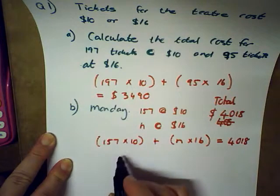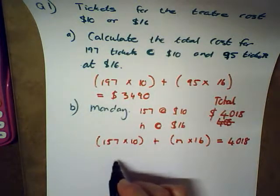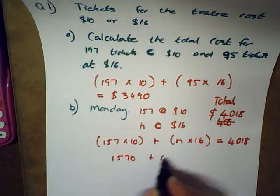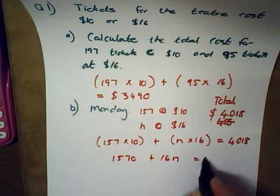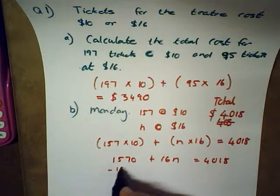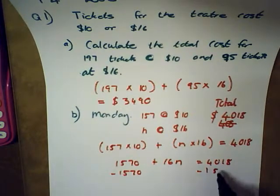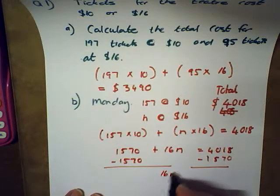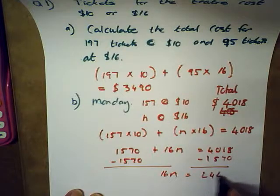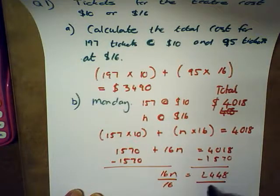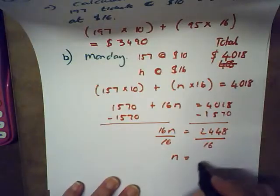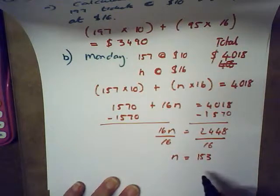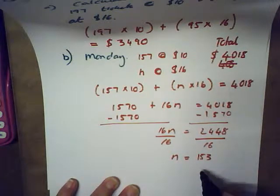That gives us 1570 plus 16n equals 4018. Subtracting 1570 from both sides leaves 16n equals 2448. Dividing both sides by 16 gives n equals 153, so there were 153 tickets sold at $16 each.